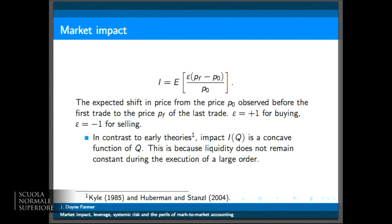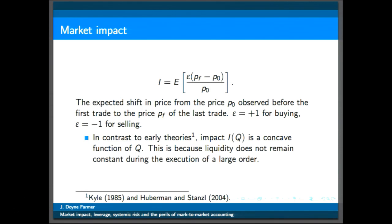This epsilon is to flip the sign between buying and selling. In other words, you snapshot the price before you make the trade, and then you wait and see what some final price is. Depending on what you're thinking about, you might have a different definition of this price. But let's think of this as the last price in the sequence of trades that are associated with the order.